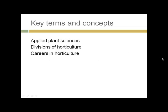For this week, the key terms and concepts are going to relate to Applied Plant Sciences, which is what horticulture is. We'll get into the main divisions of horticulture, although there's no agreement on what those divisions are — it's a little bit arbitrary. As we go through the class, we'll talk about horticultural specialties and other ways of slicing and dicing the information and practice of horticulture. The assignment for this week will ask you to get into some career research and planning.